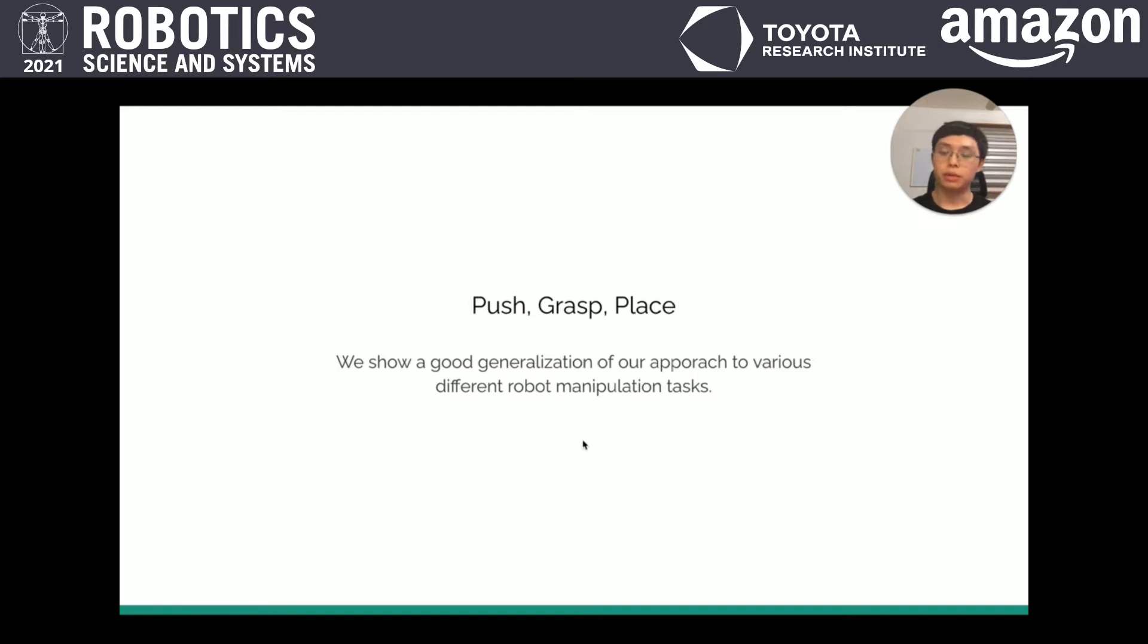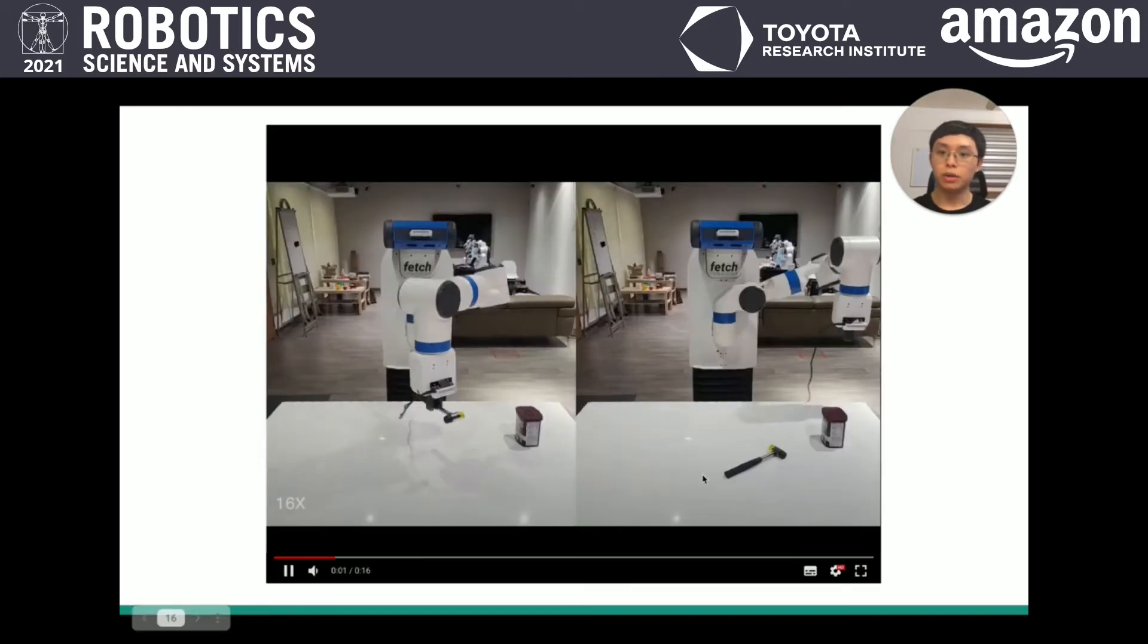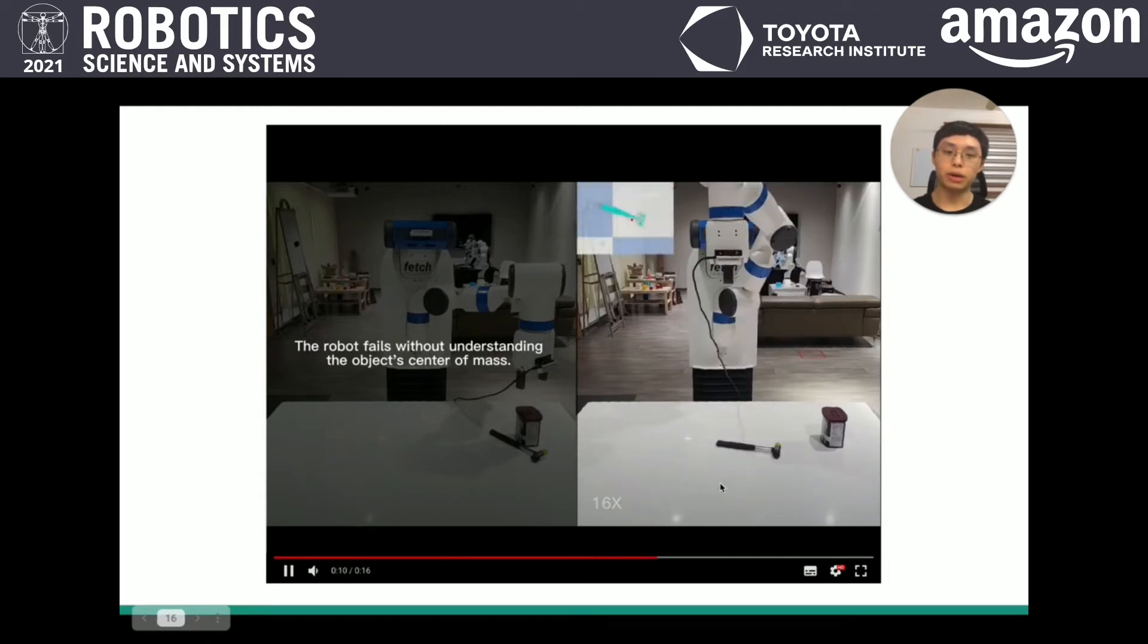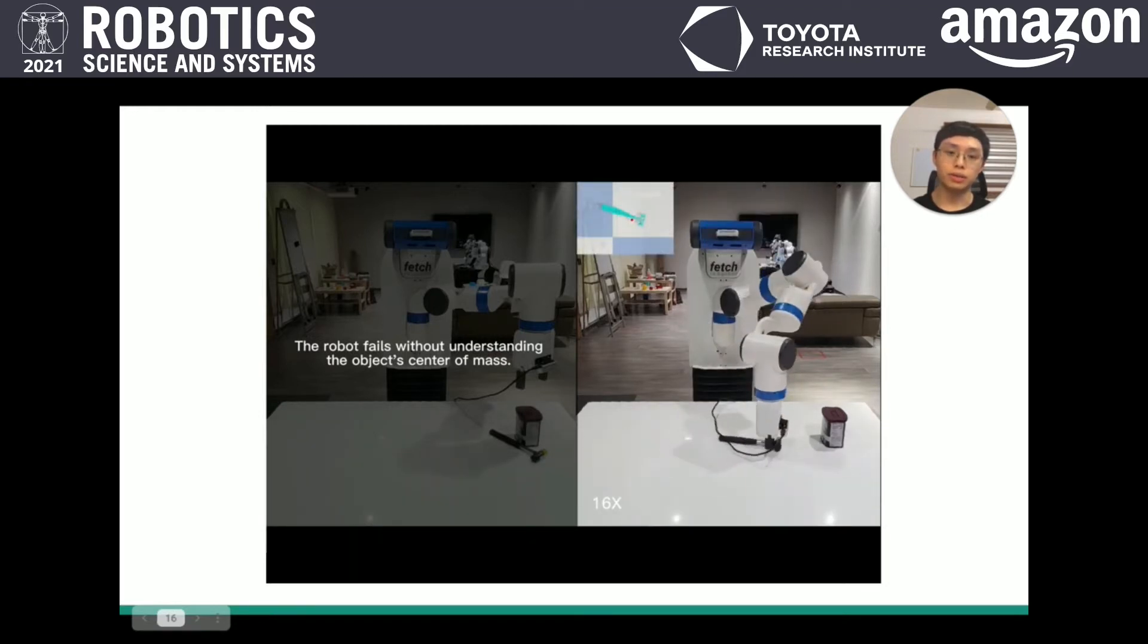For push, grasp, and place, we also show good generalization of our approach to various different robot manipulation tasks. For example, here we are doing a placing task without understanding the center of mass. The robot fails. Now we are trying to interact with the hammer to find out where is the center of mass. After this, we can complete the task successfully.